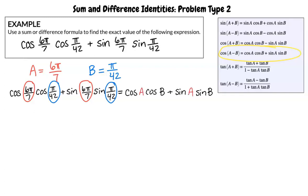On the right side of the equation, we can see that the placement of A corresponds to 6π/7 on the left side. We can also see that the placement of B on the right side corresponds to π/42 on the left side.